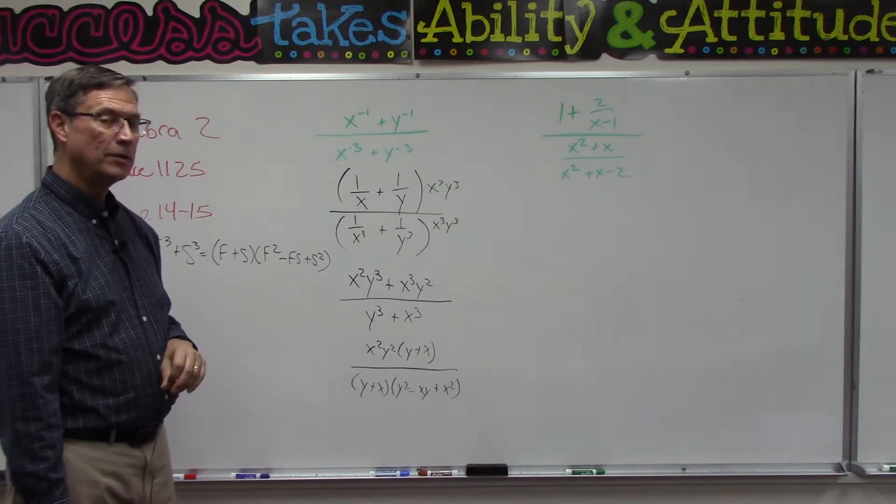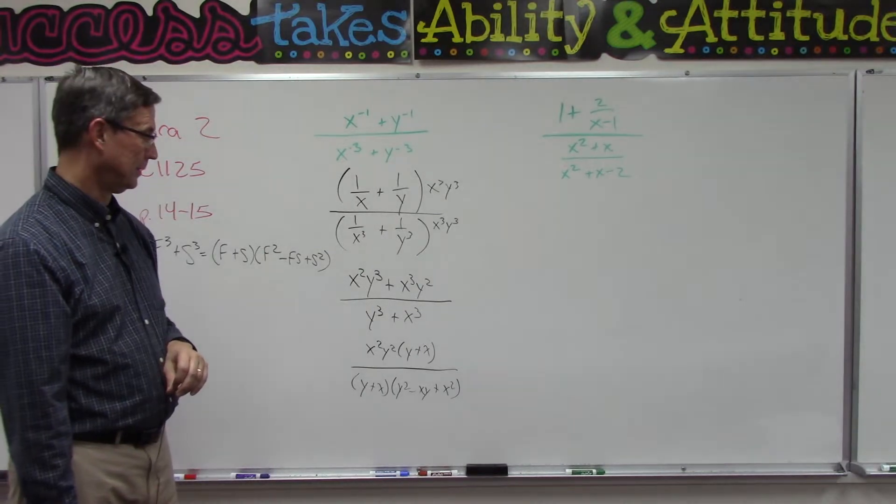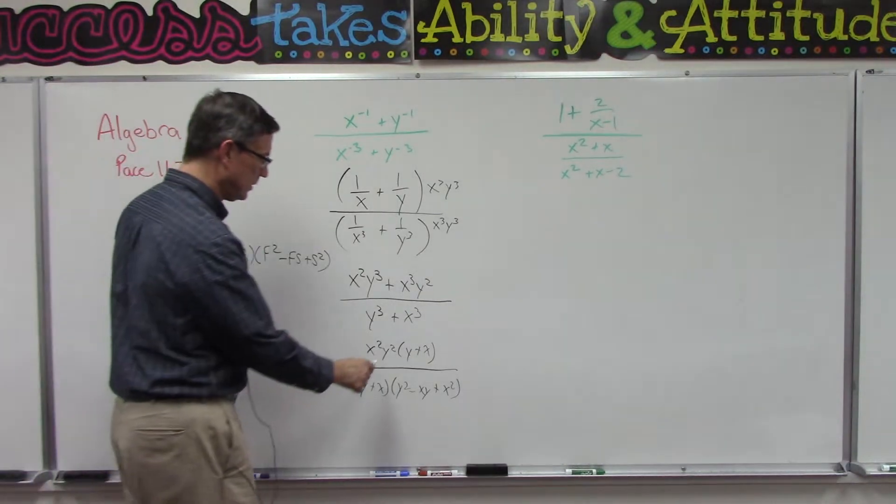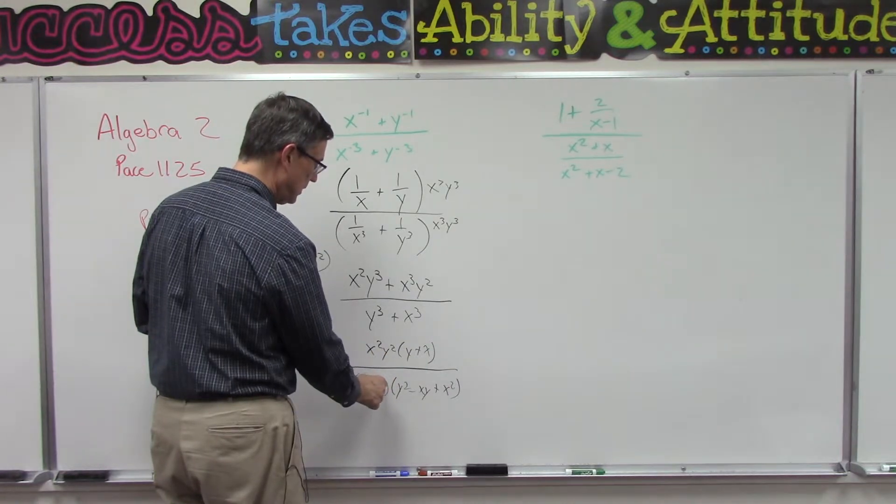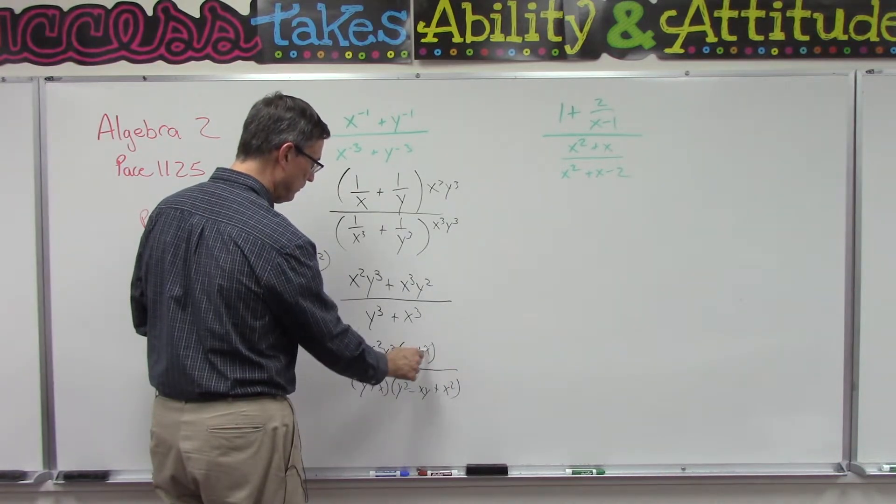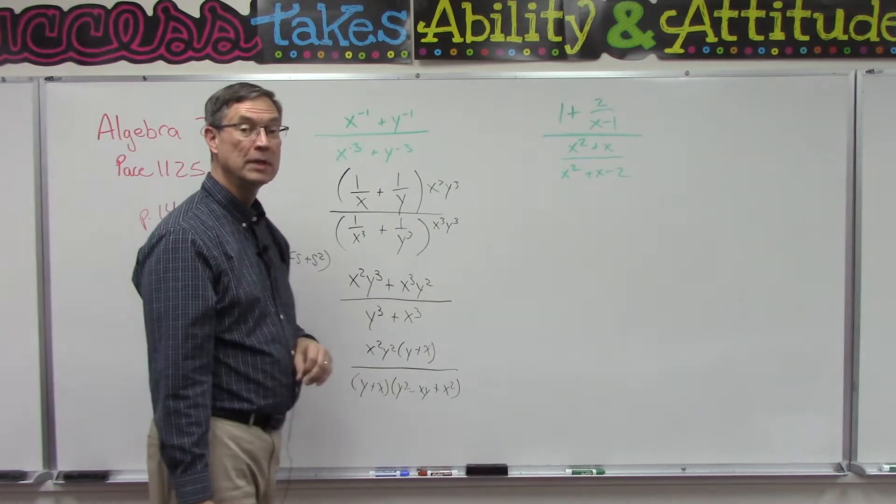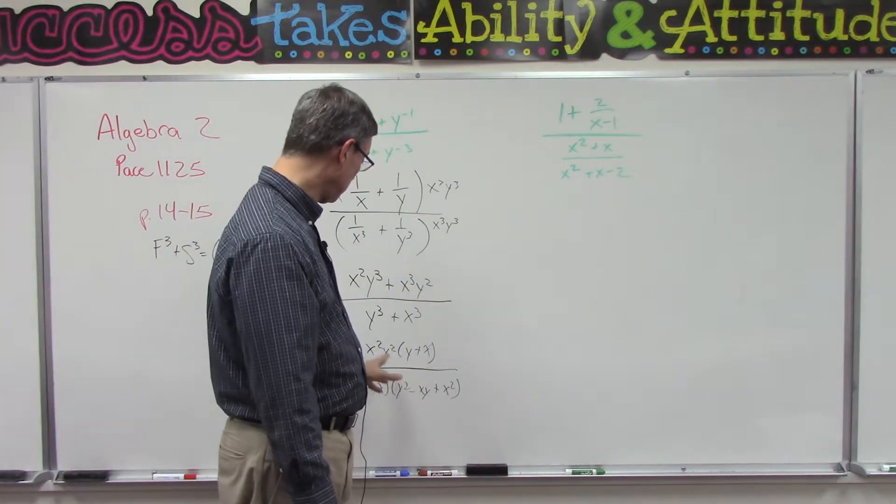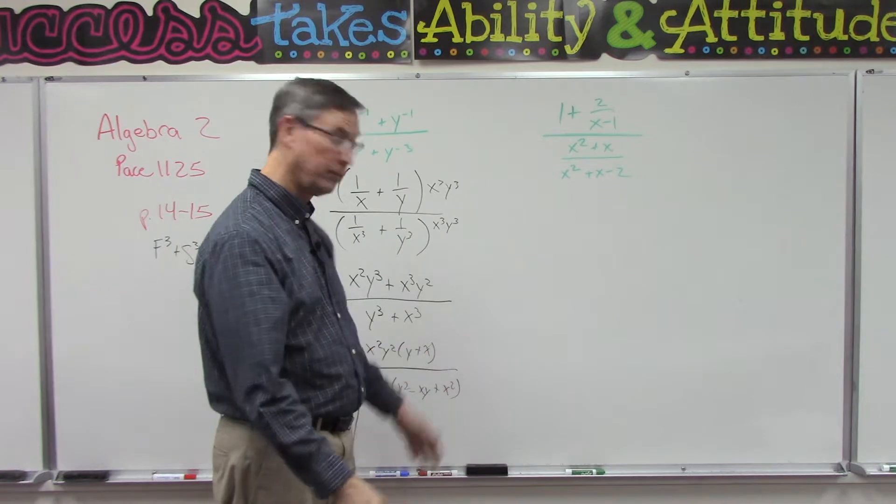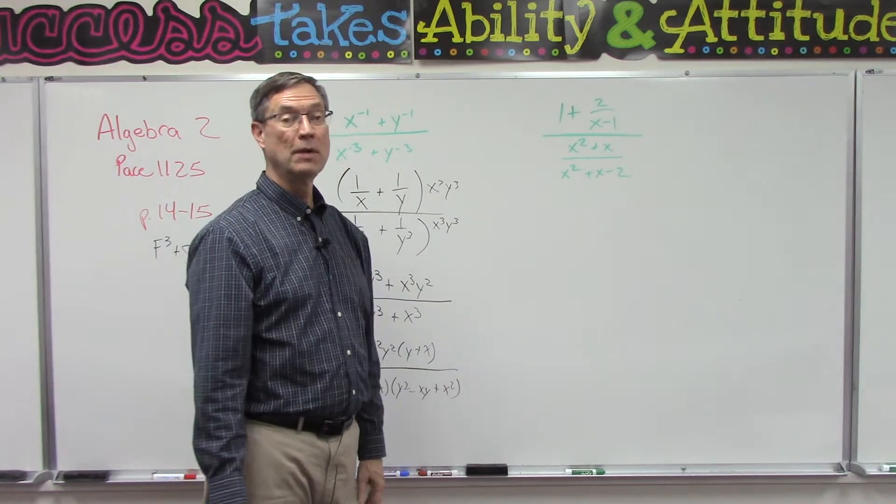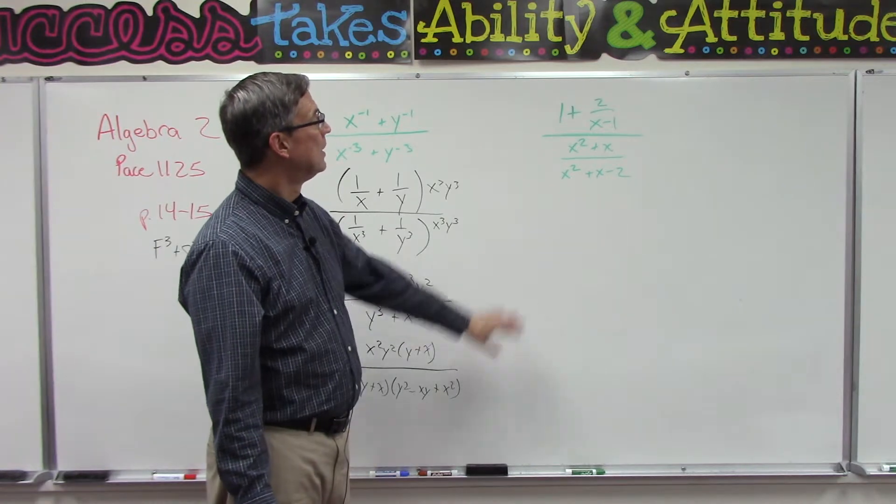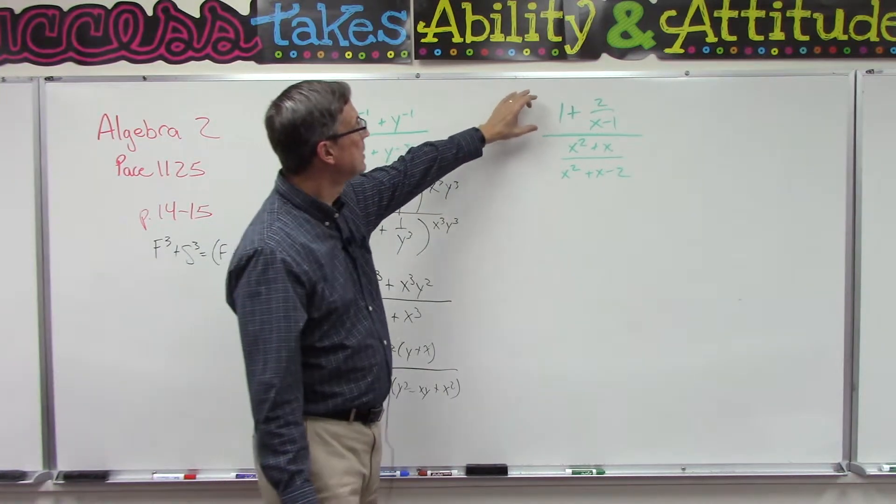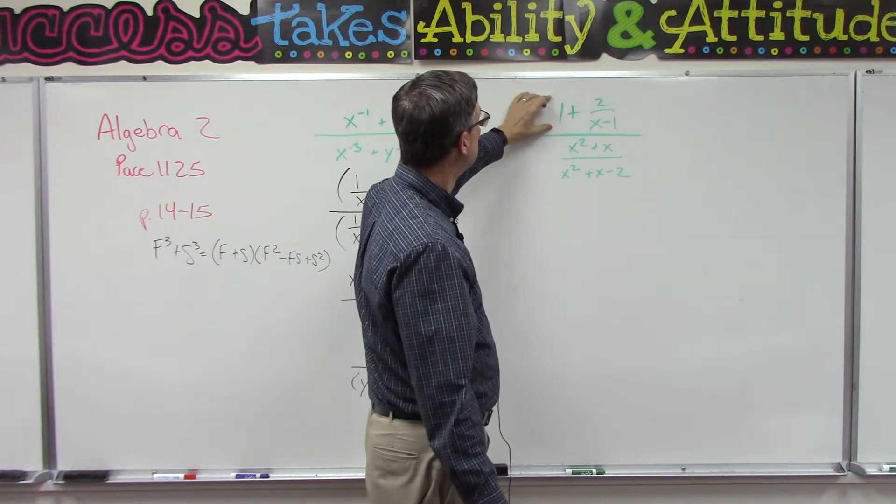Oh, do you see what I see? This term on the top is now the same as this term on the bottom. Boom, boom, you can cancel those out, and what's left is your answer because we can't factor that any further. Let's look at method two, which says this divided by this will give me the answer.